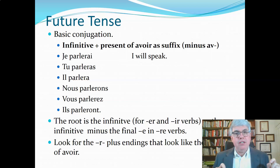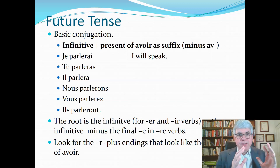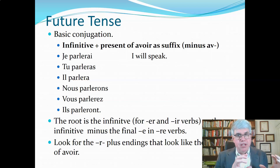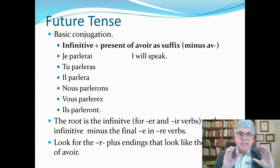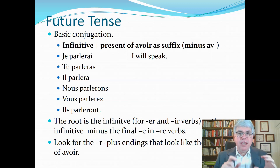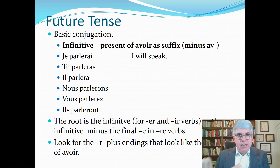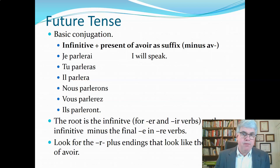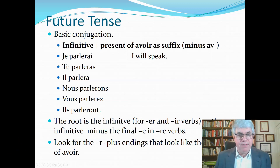The basic conjugation of the future tense is: you take the infinitive, don't drop anything off of it, and then stick on the present tense of avoir using that as a suffix — except for the parts of avoir that have an 'av'.